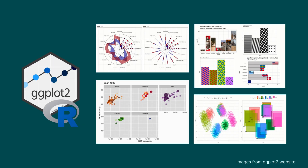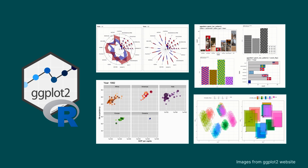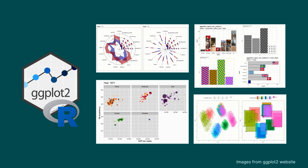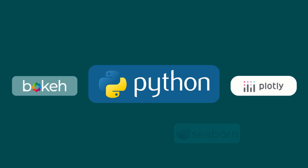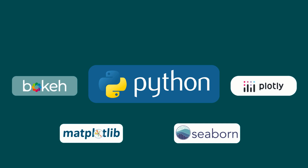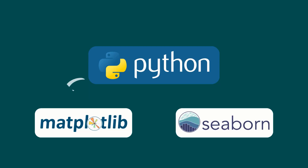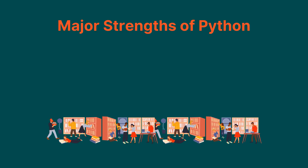When it comes to data visualization, R has a clear edge over Python. R's ggplot2 library is widely considered to be one of the best data visualization tools available and it is often used to create publication quality plots. Python, on the other hand, has a number of libraries for data visualization such as matplotlib and seaborn, but they are not as powerful as ggplot2.